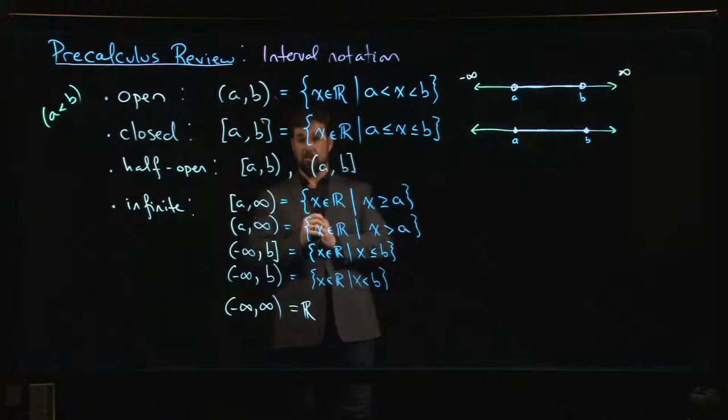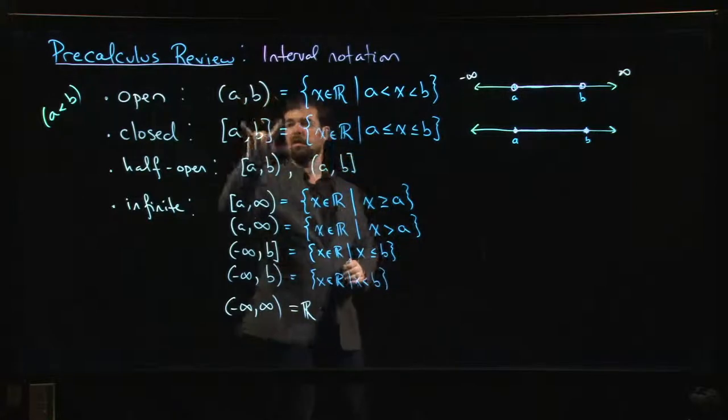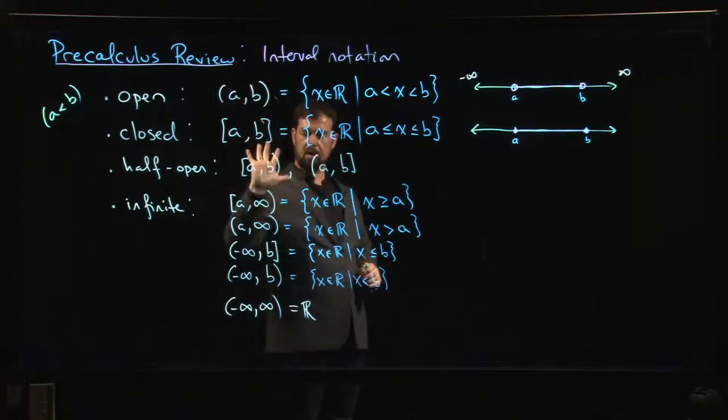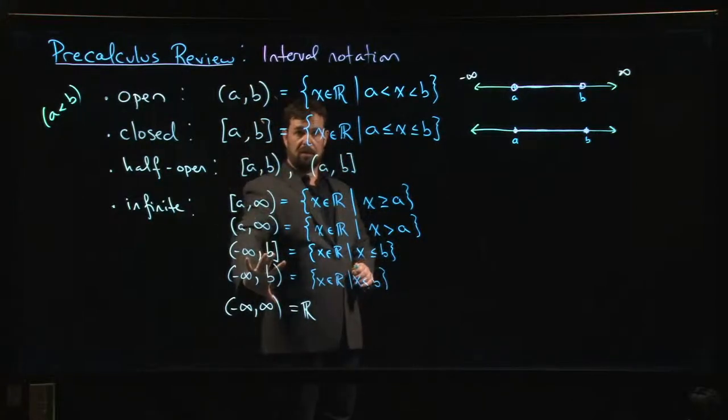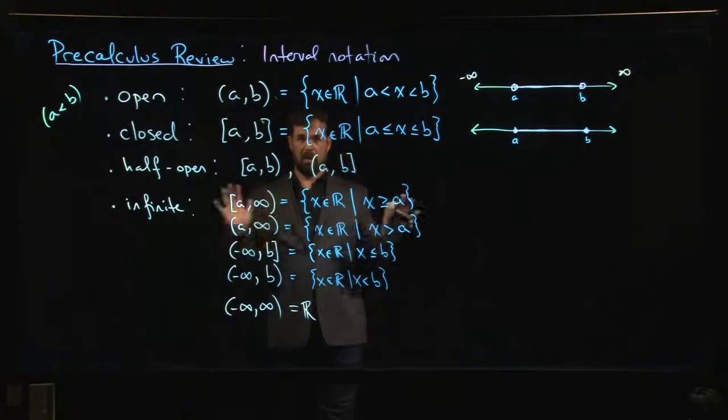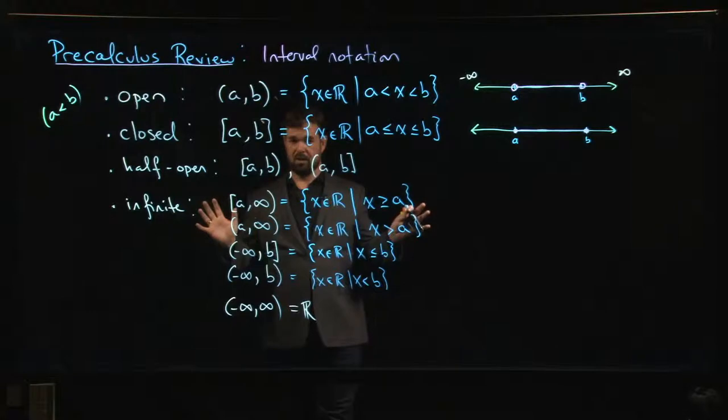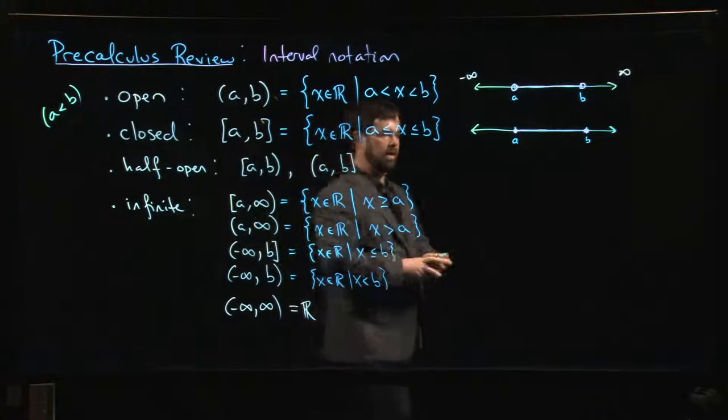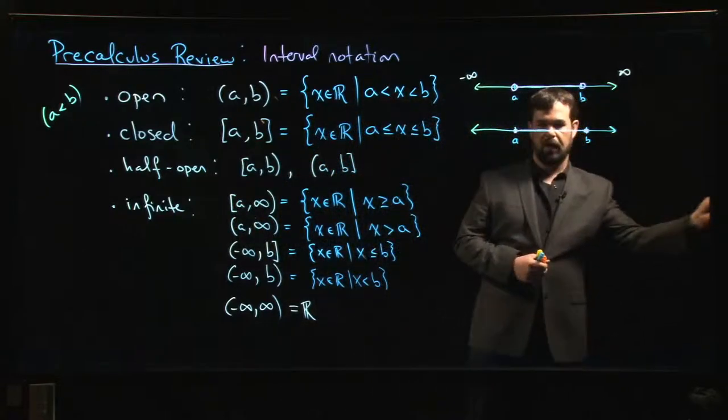In the last video we introduced nine types of intervals - open, closed, the two types of half-open, and all the ones that involve infinity. For the most part, that's going to do the job for any sets of real numbers you need to describe, but there are times where you might need to also combine intervals.